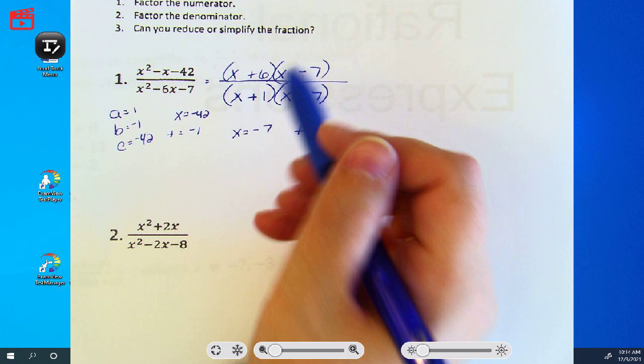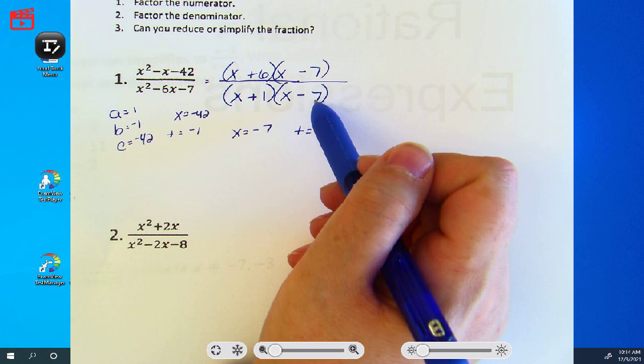If the 1 is negative, then you're going to get positive 6. So we want the negative, the 7 to be negative. Yep, totally do that.